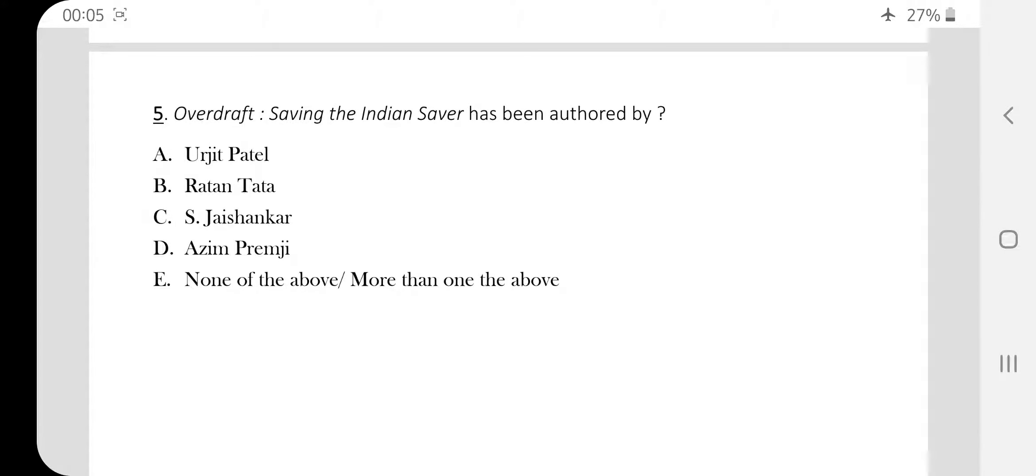Question number five. Overdraft, Saving the Indian Saver has been authored by. The author of this book is option A, Urjit Patel.